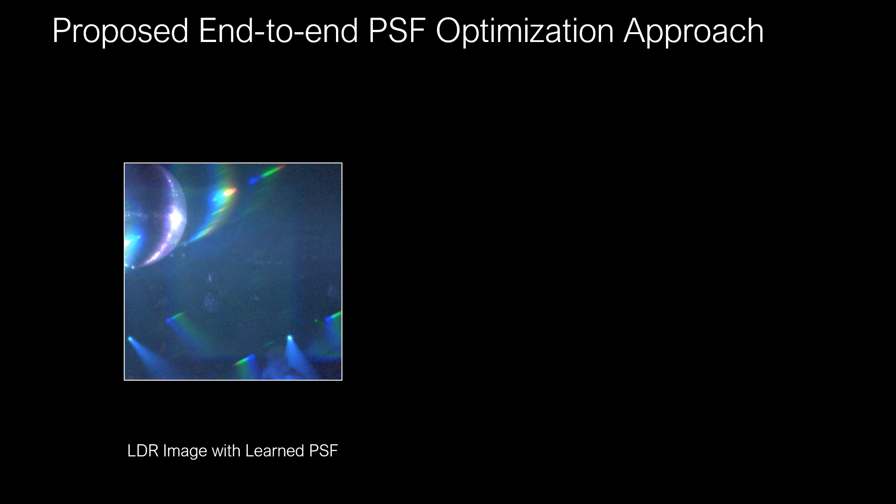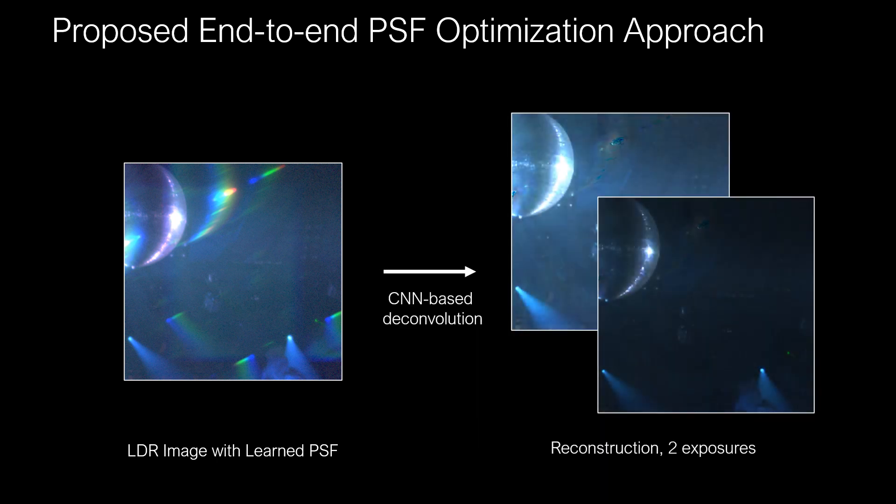In this work, we introduce the end-to-end design of optics and image processing for single-shot high-dynamic range imaging. In a training phase, we learn an optical filter whose point spread function encodes high-dynamic range information into a single low-dynamic range exposure. Using a CNN-based reconstruction technique, our method then allows the high-dynamic range image to be recovered.